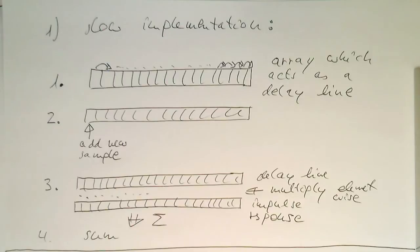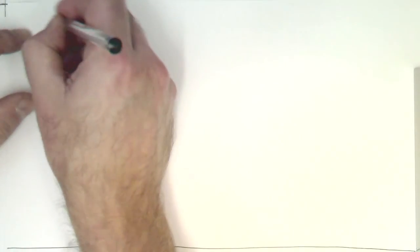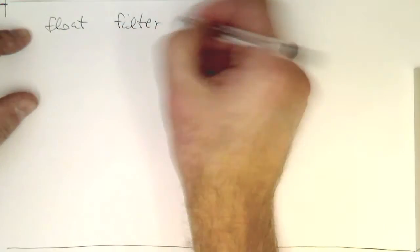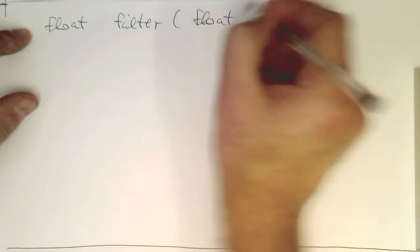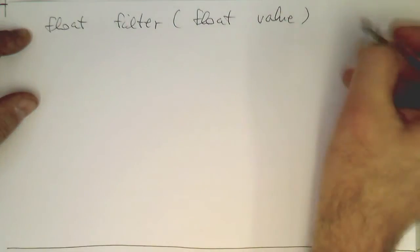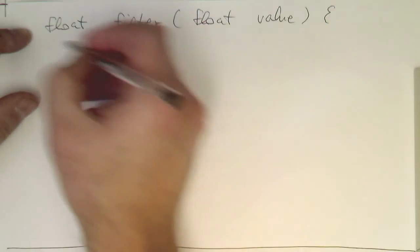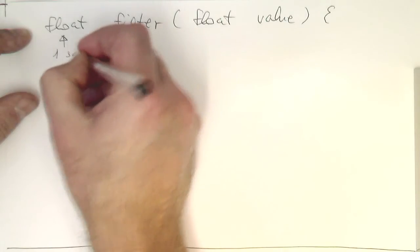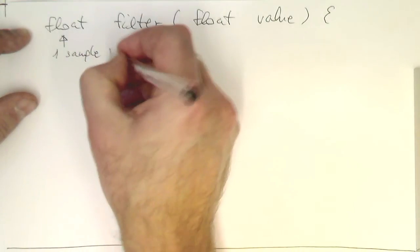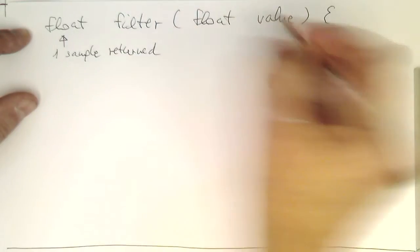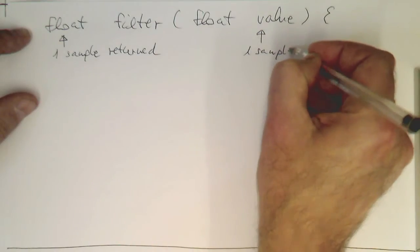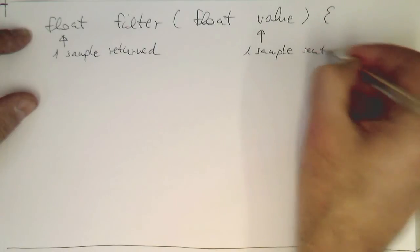Okay, so that's roughly the hand-waving way of explaining this. So let's now do it in a proper C function. So float filter, float value. So that's our starting point. And we see already, so there's one sample returned and there's one sample sent in.